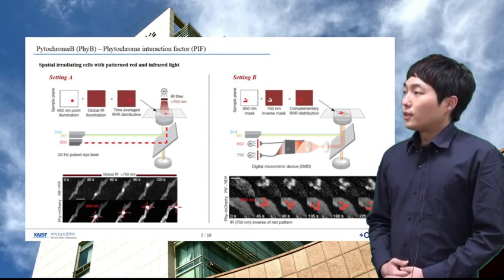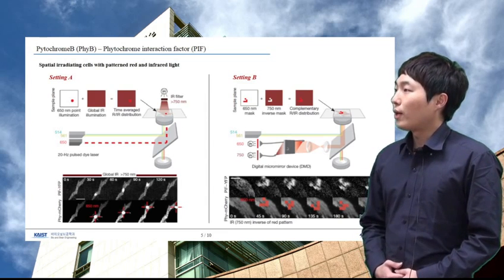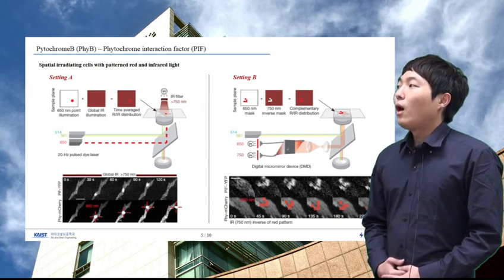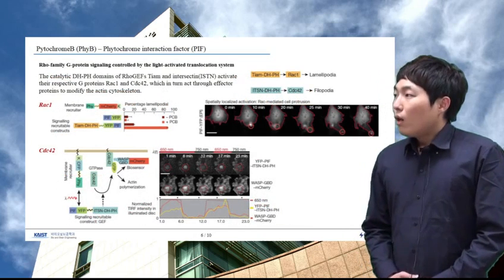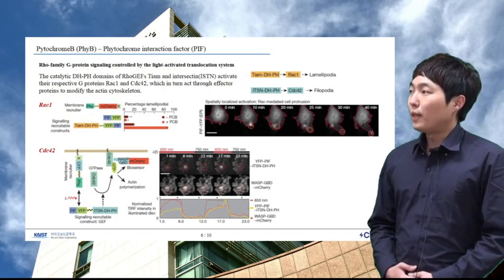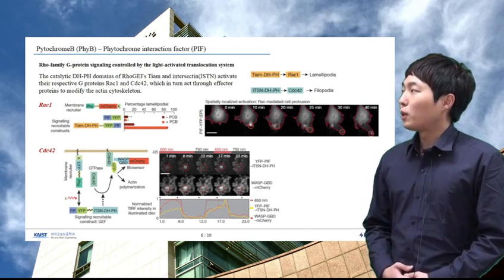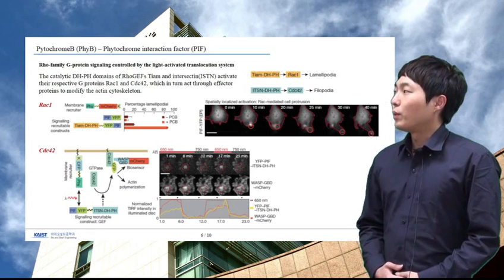This research suggests that the module has high potentiality of controlling a variety of cell phenomena with high spatial resolution. This novel Phytochrome-B PIF module would be highly applicable to many biological research and the developers were highly motivated to engineer a membrane recruitment system.